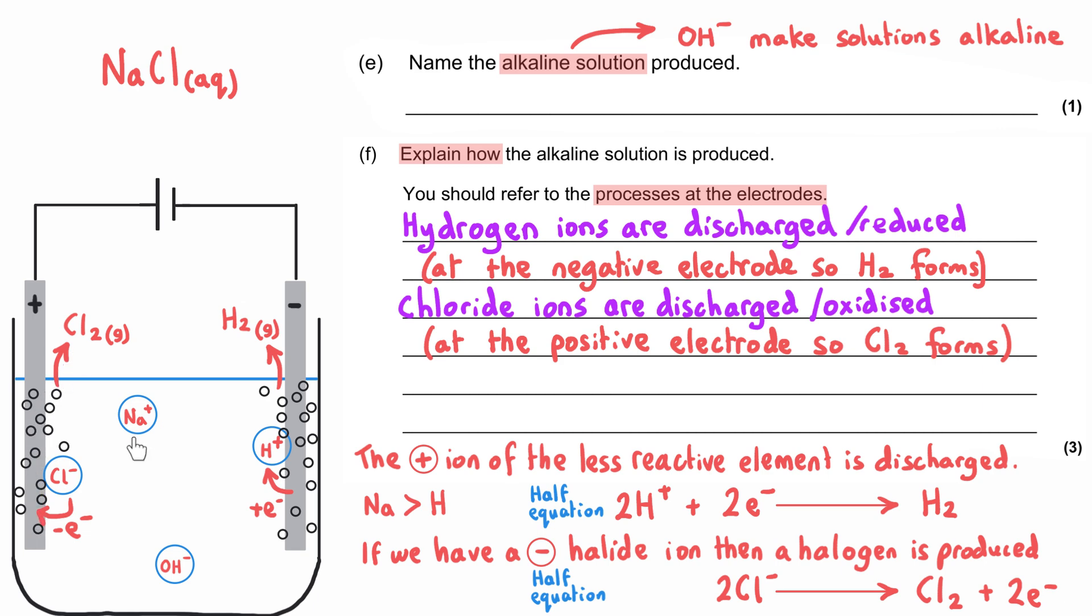Finally, the sodium ions Na+ and the hydroxide ions OH- are left behind in solution and are not discharged. That's actually what we need to say for the third mark for explaining the formation of the alkaline solution. Going back to E, we can see that this alkaline solution must be NaOH, or in other words, sodium hydroxide. We would get one mark for E for naming sodium hydroxide and three marks for F for explaining how this sodium hydroxide solution was produced, one mark for each of my three bullet points.